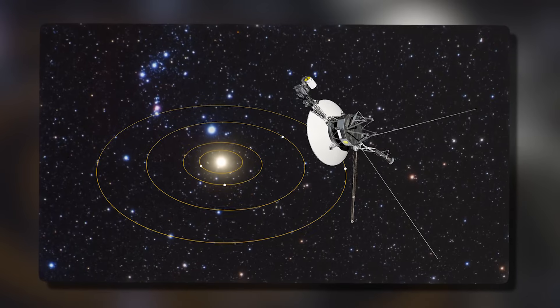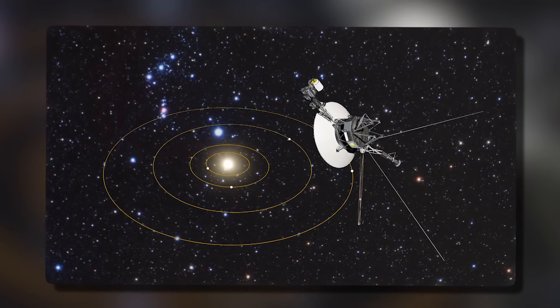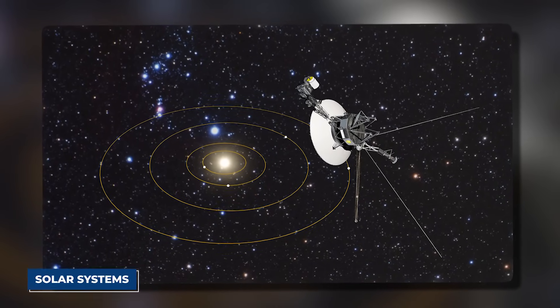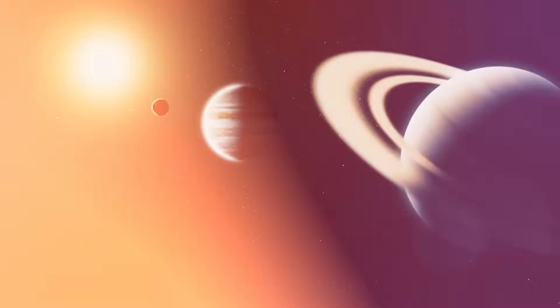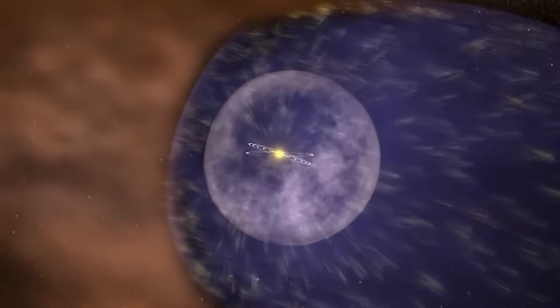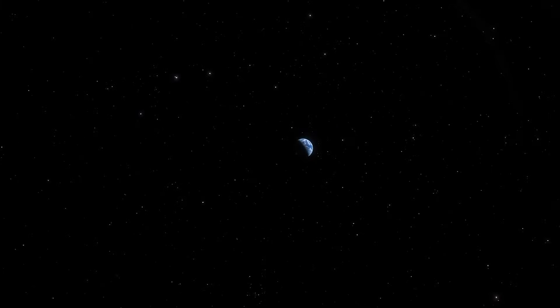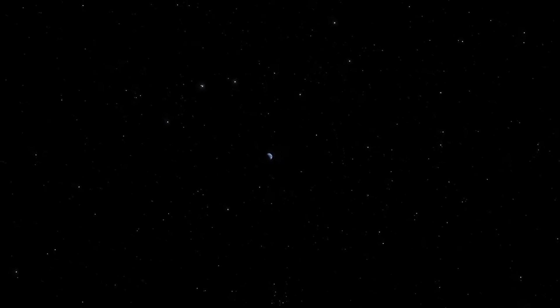Voyager 1, a vessel no larger than a small car, hurtling through the desolate stretch between solar systems, may have brushed against a phenomenon not native to our understanding of physics. The first speculation was that it may have entered a micro-wormhole or a localized rift in the fabric of spacetime. However, this theory falters under scrutiny.